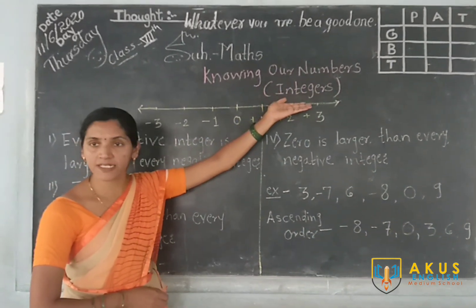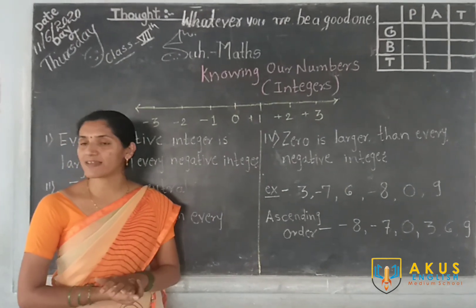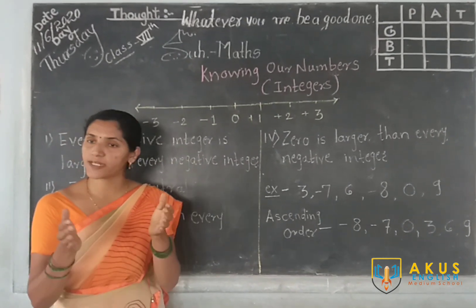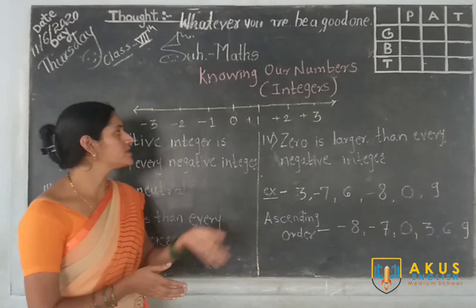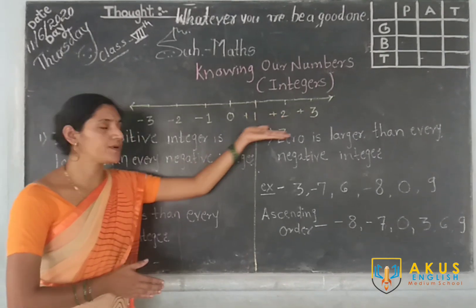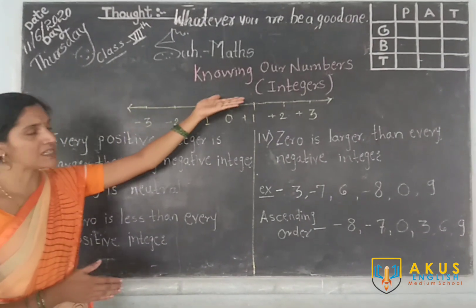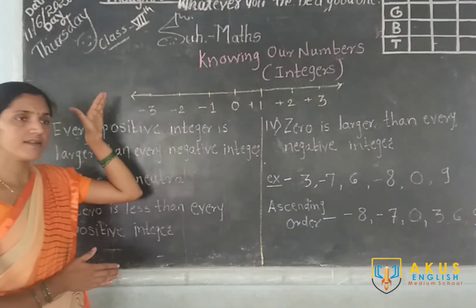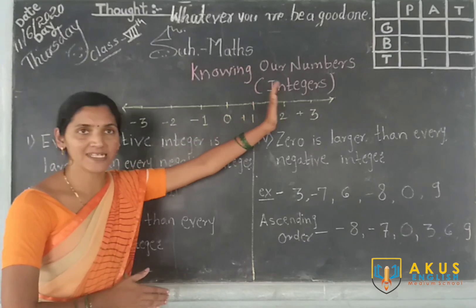Now what do you mean by integers? These you have already been introduced to last year. Integers means the set or collection of numbers which includes 0, positive numbers, as well as negative numbers. So integers are made up of 0, positive numbers, and negative numbers — together they are known as integers.